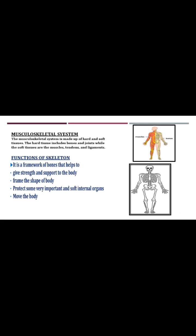The musculoskeletal system is made up of hard and soft tissues. The hard tissues include bones and joints, while the soft tissues are the muscles, tendons and ligaments.